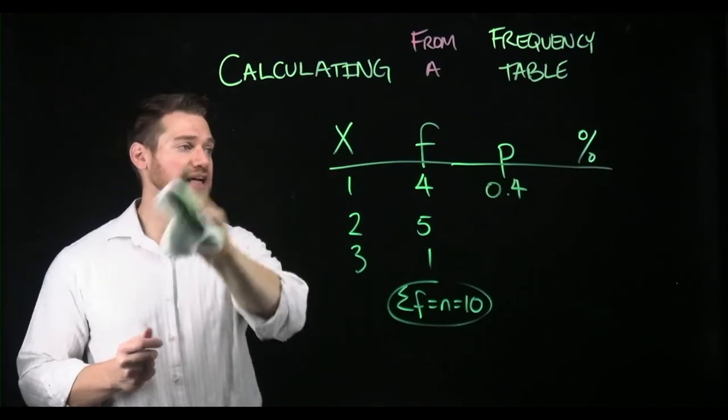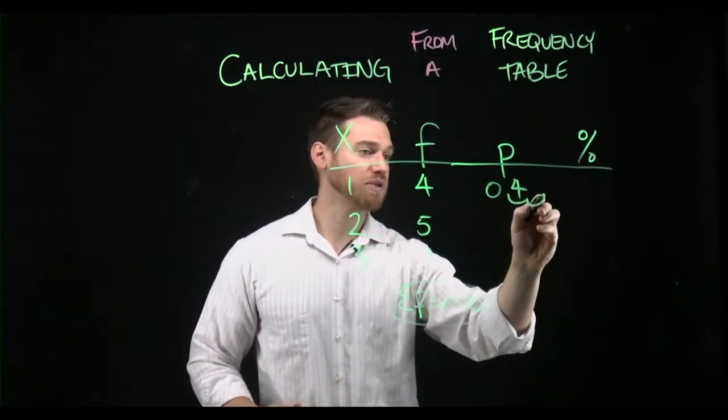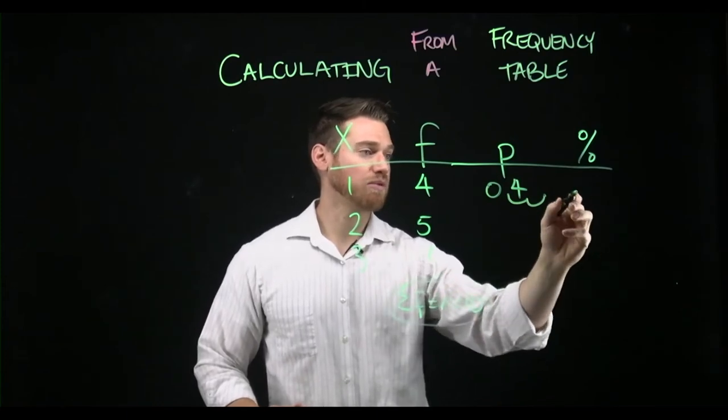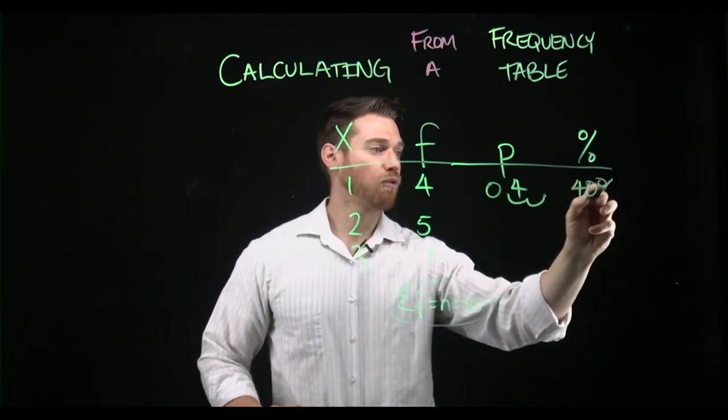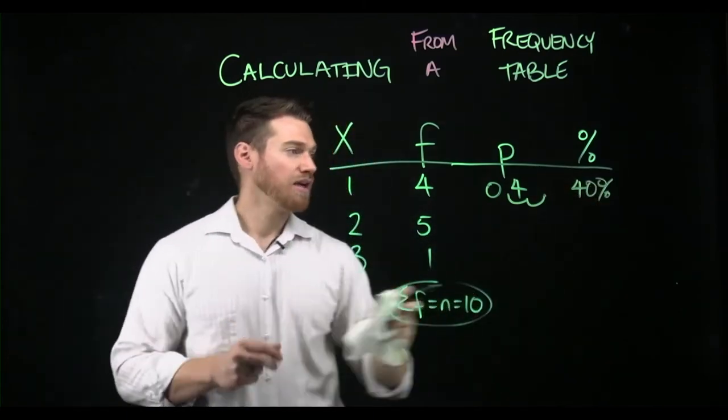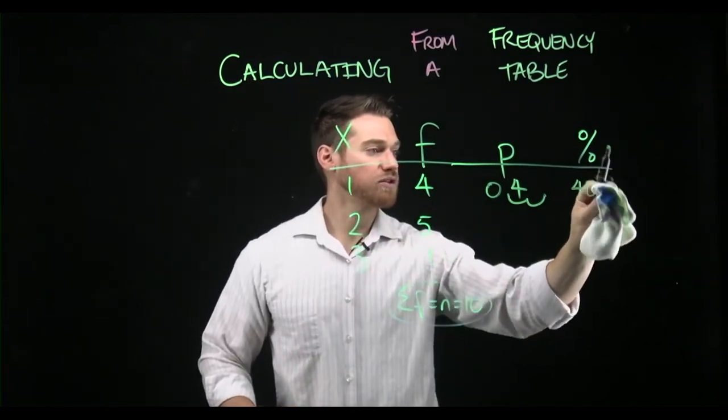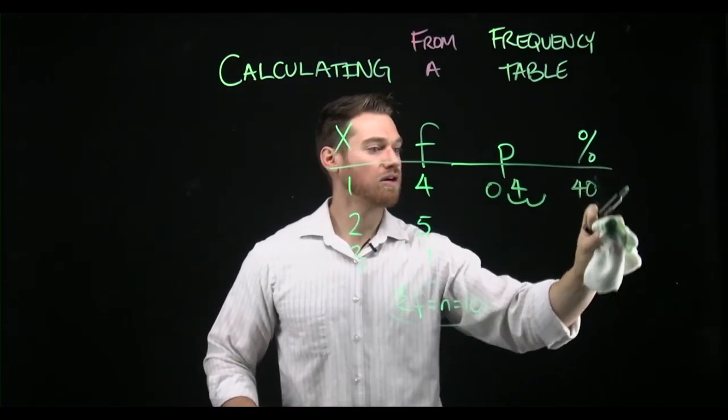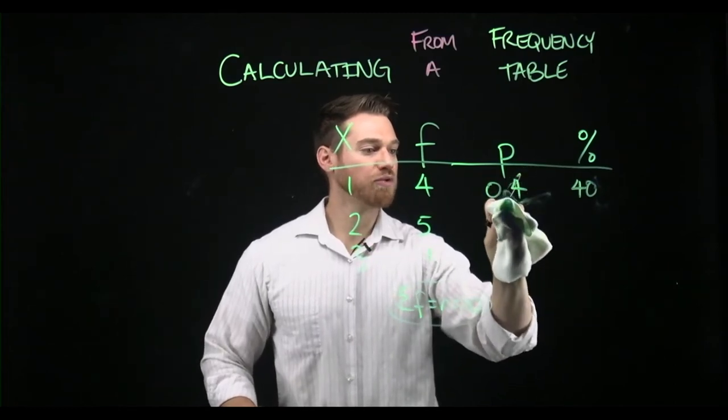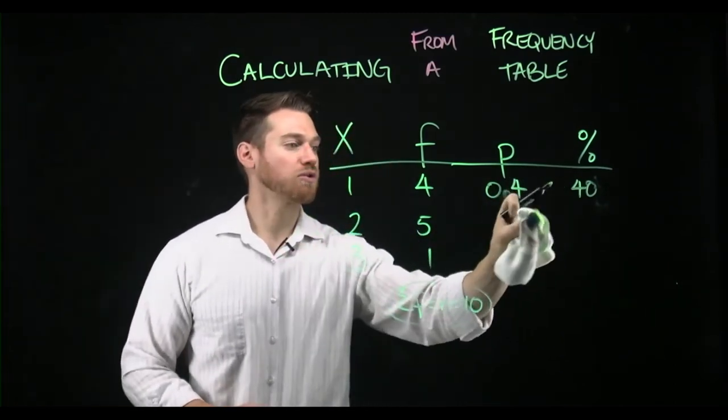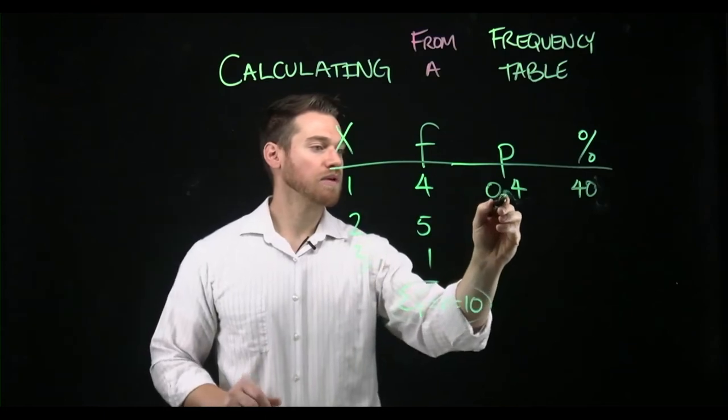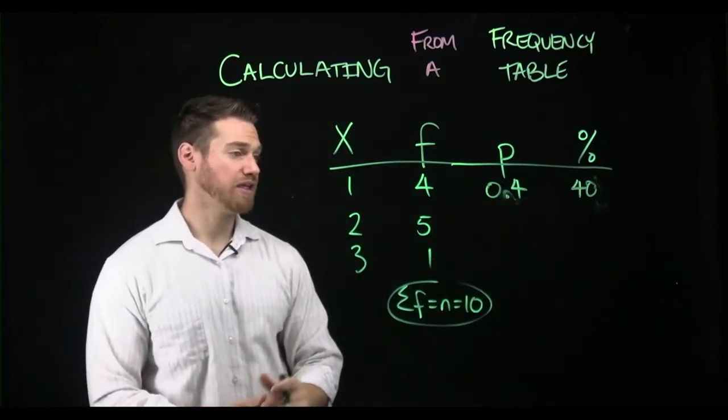So here, if we take a proportion, multiply it by 100, we're gonna move the decimal place, right? That's all that happens when we multiply by 100, and we get 40% for our percent value. And we'll just leave that off being the column is labeled. So 0.4 is the proportion of scores that take the value one, and 40 is the percentage.